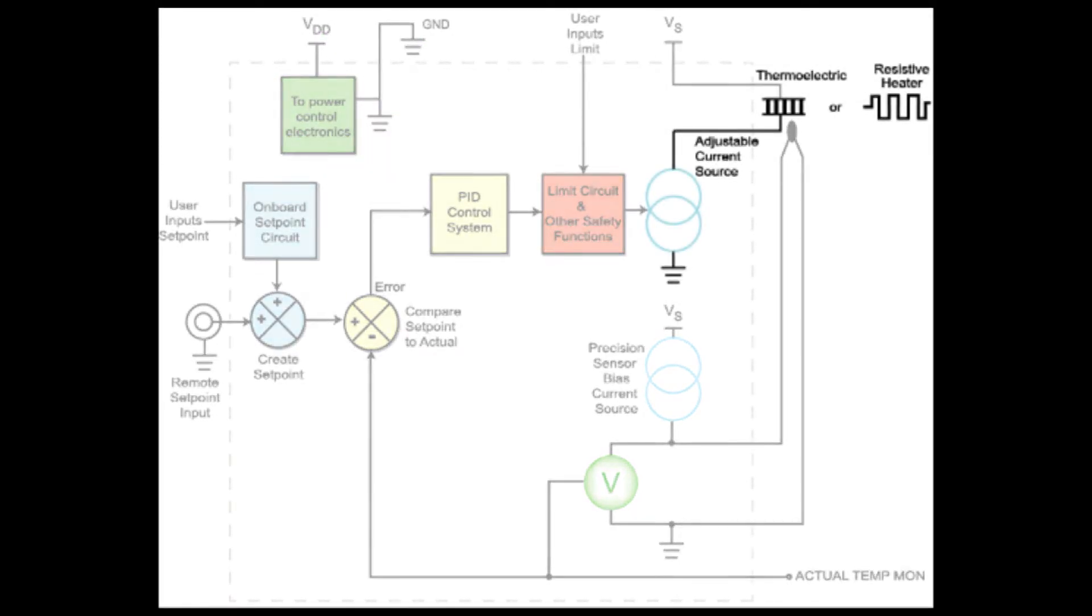One key section of a temperature controller is the adjustable bi-directional current source, also known as the output stage. This section responds to the control system by driving current to the thermoelectric or resistive heater. For resistive heaters, wiring may be required to restrict current flow to be unipolar.